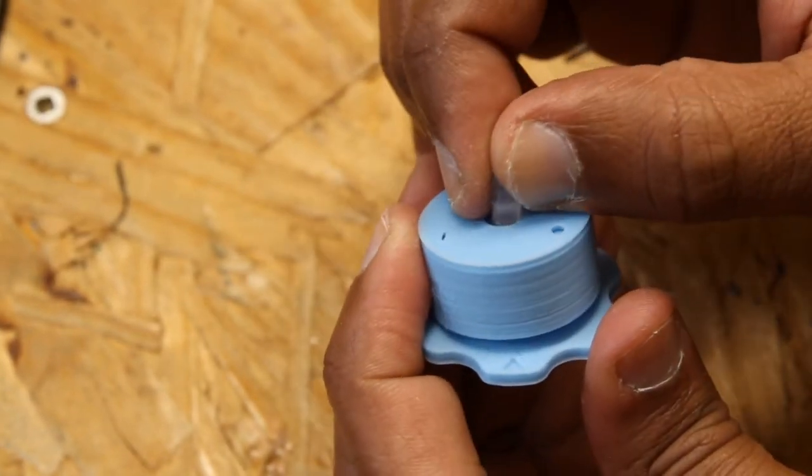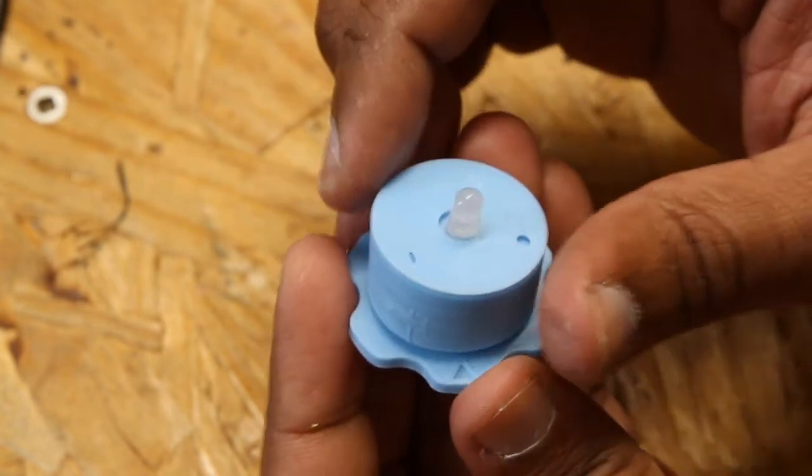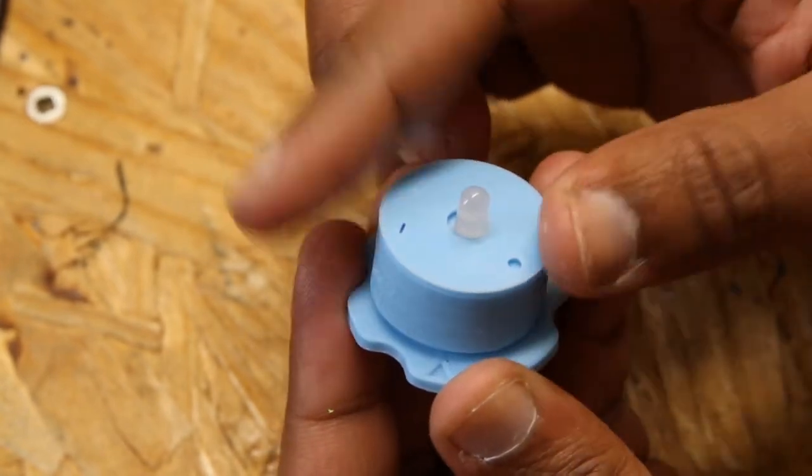To turn on our LED, we're just going to rotate it to the on position, and to turn it off we'll rotate it to the off position.